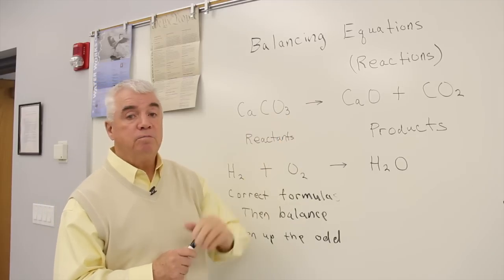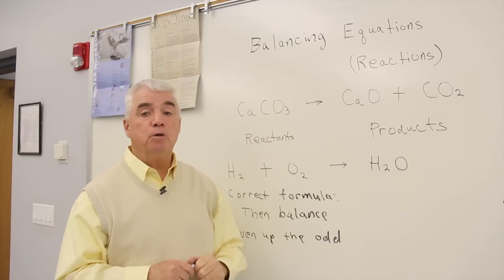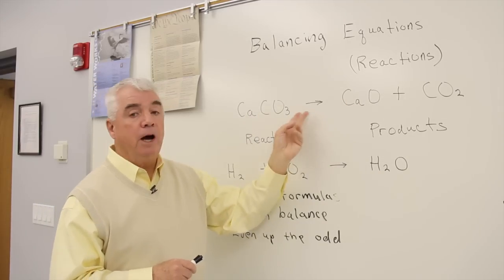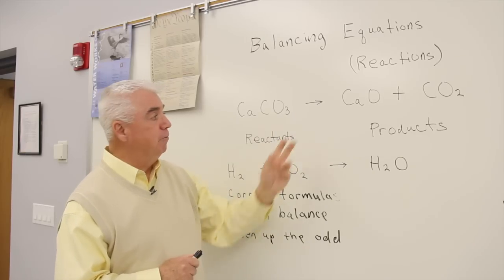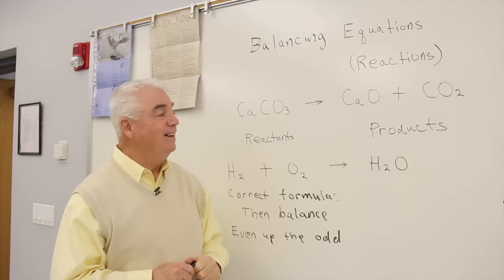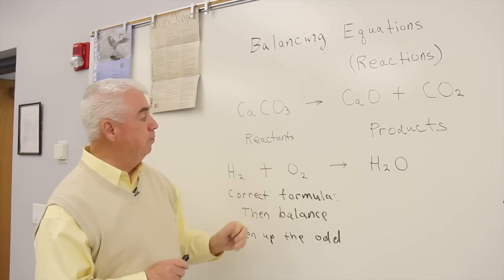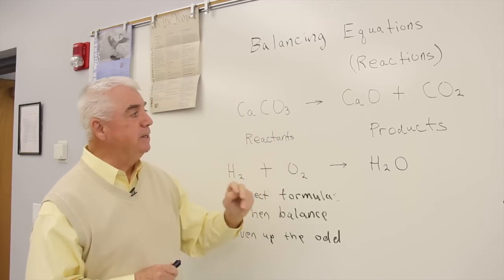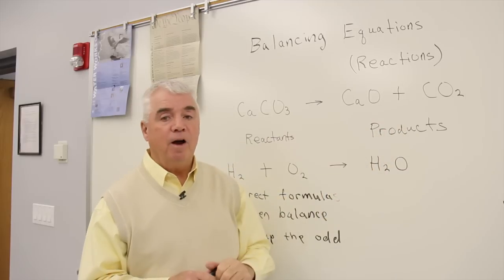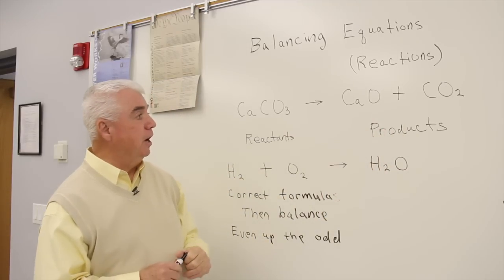We use an arrow to represent the fact that a chemical change is occurring, or sometimes we put an equal sign here if we don't have the capability of showing an arrow in digital format. Those materials on the left typically we call reactants. Over here are the products on the right-hand side.